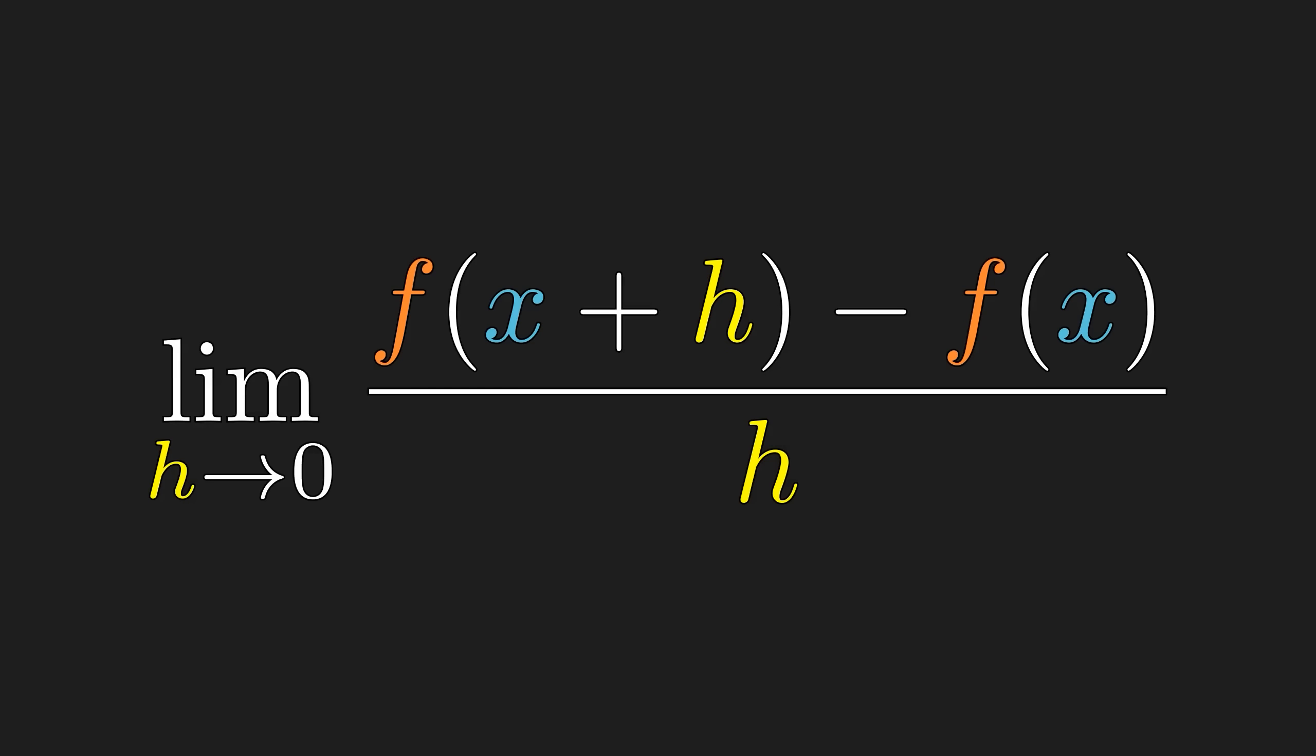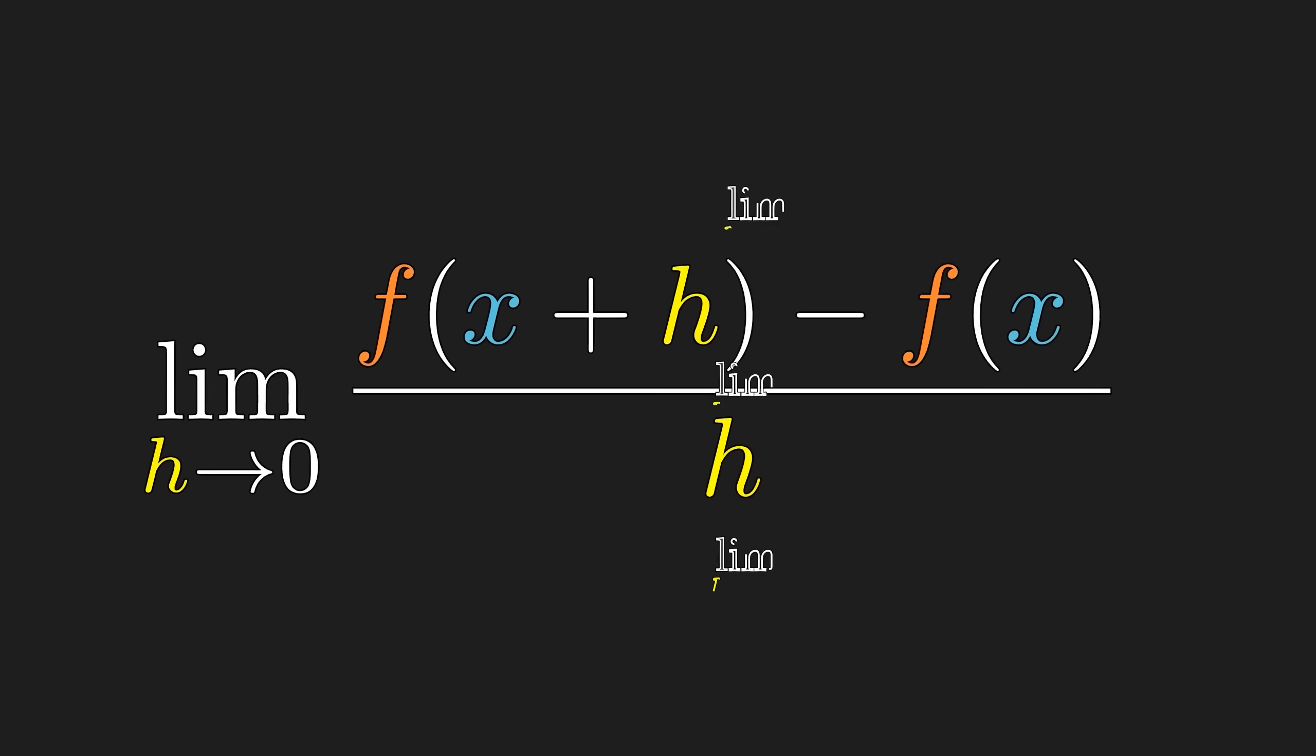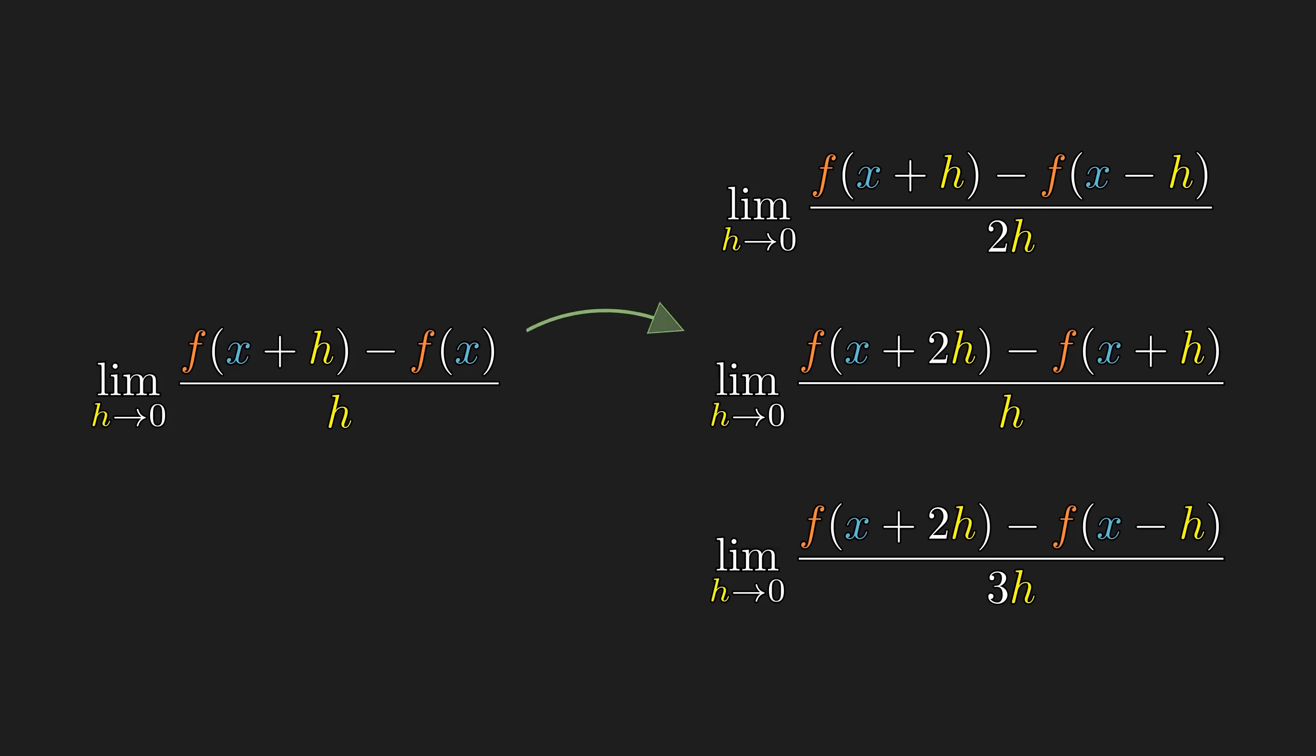Suppose our function f is differentiable at x, which by definition means this limit exists. Then, as we saw earlier, the limit of any other divided difference will also exist, and they will all be equal to the derivative. But even if any of these other limits exist, the function might not be differentiable.